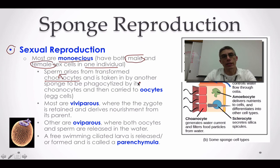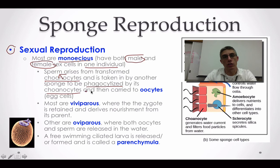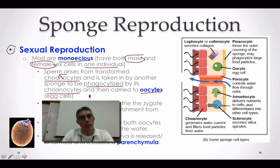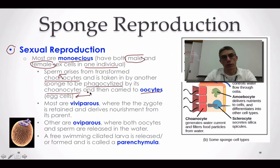These sperm are going to be taken in by another sponge, and once they're taken in, they're going to be phagocytized by the choanocytes found in that sponge — similar to food particles being taken in by those choanocytes. Then they're going to be carried to the oocytes, which are simply the egg cells found within that sponge.